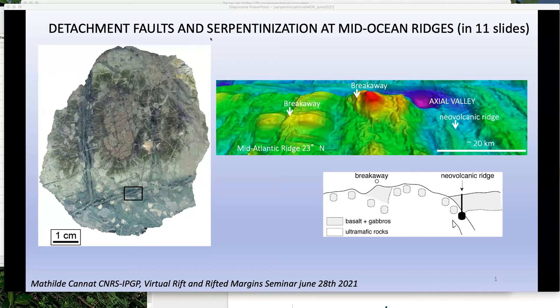In the first slide you see a sample from an abyssal peridotite, and an important thing is that serpentinization is not homogeneous in the samples we collect. We have a core that is partially serpentinized with a mesh texture, and serpentinization degree increases towards these veins — which actually were micro-fractures that helped fluid circulate.